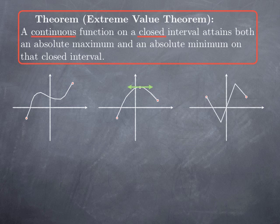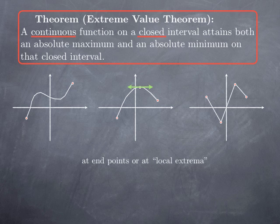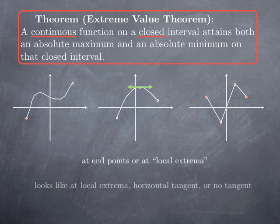We could also have something where both maximum and minimum occur in the interior of the interval, but at places where we cannot even talk about the tangent line. So it looks like the possibilities are that extrema occur at the endpoints of the interval, or at what could reasonably be called local extrema — a local maximum or local minimum — where we have either a horizontal tangent or no tangent at all.